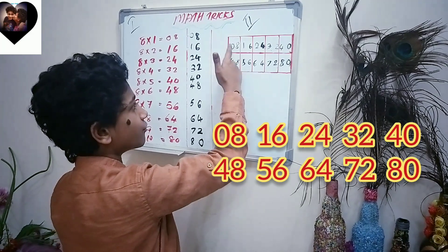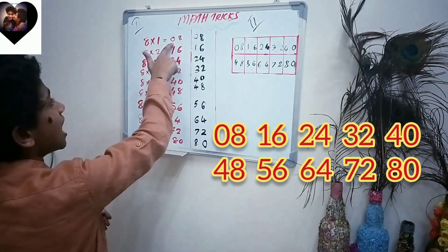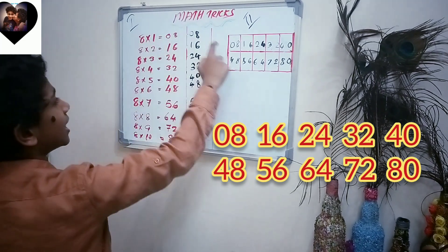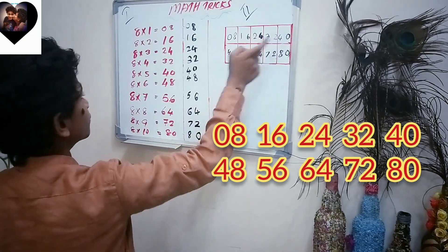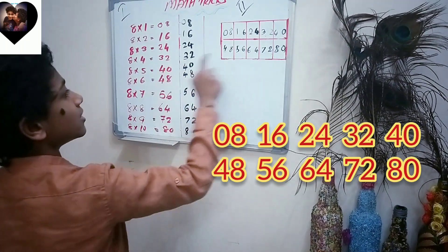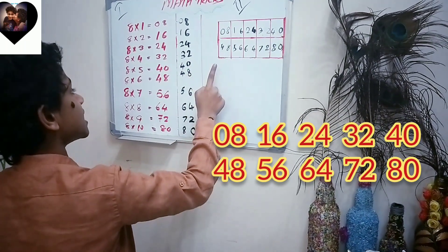That means your first answer is this. As you guys can see, our first answer is 08, and we got 08. Then 16, 16, 24, 24, 32, 32, 40, 40. Then go to the next one: 48, 48, 56, 56, 64, 64, 72, 72.